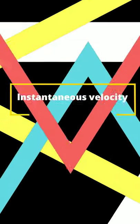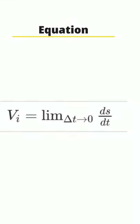Instantaneous velocity is the velocity of an object in motion at a specific point in time. The equation is: vi equals the limit as delta t tends to 0 of ds divided by dt, where delta t is the small time interval.